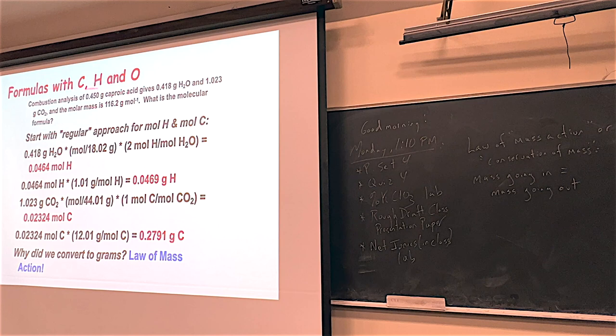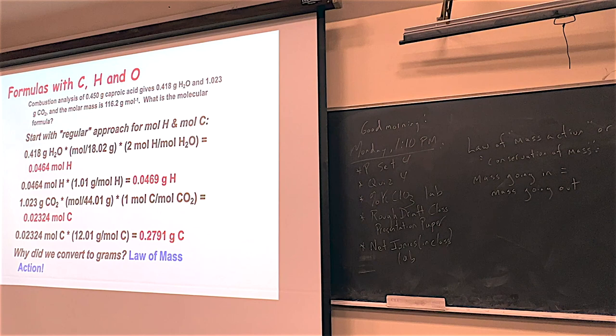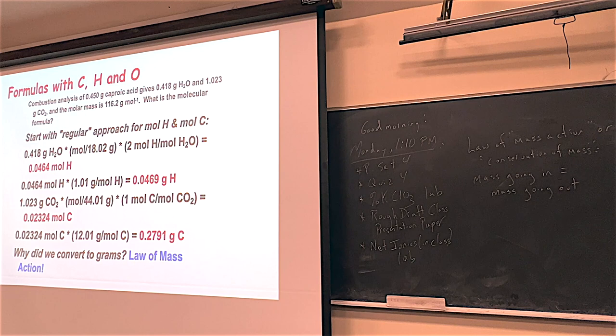Another thing we talked about this week was the law of mass action, also known as the law of conservation of mass. All it means is chemists need to account for all the matter: what goes in equals all the matter that comes out. We need to make sure every gram and atom is taken care of. So if we know grams of carbon, grams of hydrogen, and we know how much grams of carbon, hydrogen, and oxygen the sample had to begin with, we can subtract these two numbers to find how much grams of oxygen was just in the sample — not the grams from the O2. This is just the grams of the oxygen in the sample.